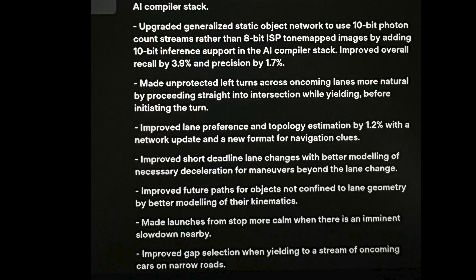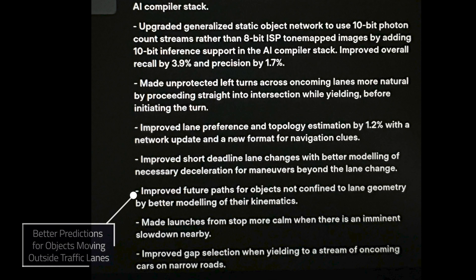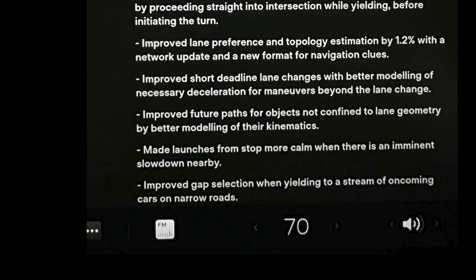Number six: improved future paths for objects not confined to lane geometry by better modeling of their kinematics. Kinematics is the study of motion of objects — a subdivision of mechanics, all part of physics. So we're applying better modeling to objects that aren't moving within a lane. I'm imagining this means the garbage truck crossing lanes that's not in the lines, or the bike that's moving between lanes — better prediction of what an object might be doing if it's not following a path that's clear based on the static objects on the road like the curbs and lines.